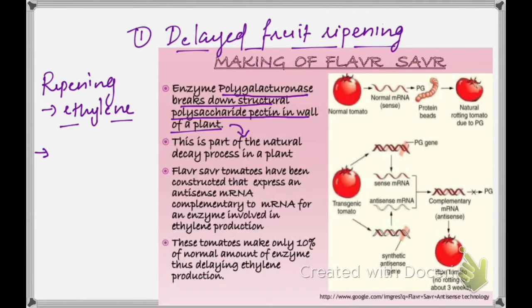In the process of making the Flavr Savr tomato — a genetically modified tomato — ripening is slowed by blocking or reducing ethylene production. This is done by introducing ethylene-forming genes in such a way that they will stop the production of ethylene itself.